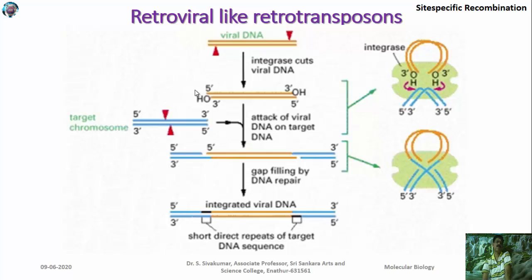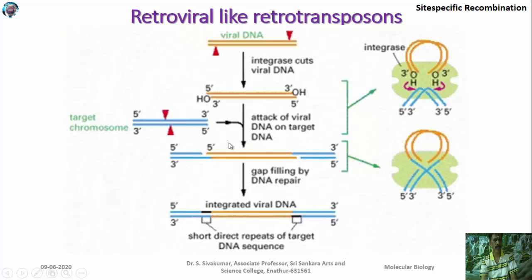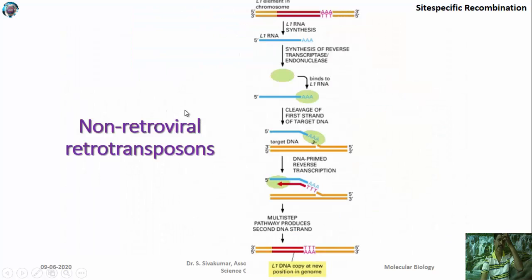The second mechanism is the retroviral-like retroposon, based on the LTR sequence. A viral DNA and genomic DNA both have particular sequence regions that are recognized. The viral DNA can be incorporated into the genomic DNA through the enzyme integrase, which recognizes particular sequences from the viral DNA and the genomic DNA, makes a nick, and then joins the two DNA partners. That is how the retroviral-like retroposons are transferred.